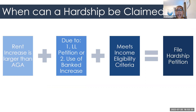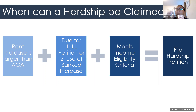Let's talk about when a person can actually claim a hardship on a banked rent increase. This can be claimed when the rent increase is greater than the AGA — the rent increase that's allowed for the year. So if you get a notice for the 5% rent increase plus some rent increases from past years, then you can claim a hardship petition. But if you're only receiving the current year's 5%, it wouldn't be a time to claim a hardship petition on that rent increase.